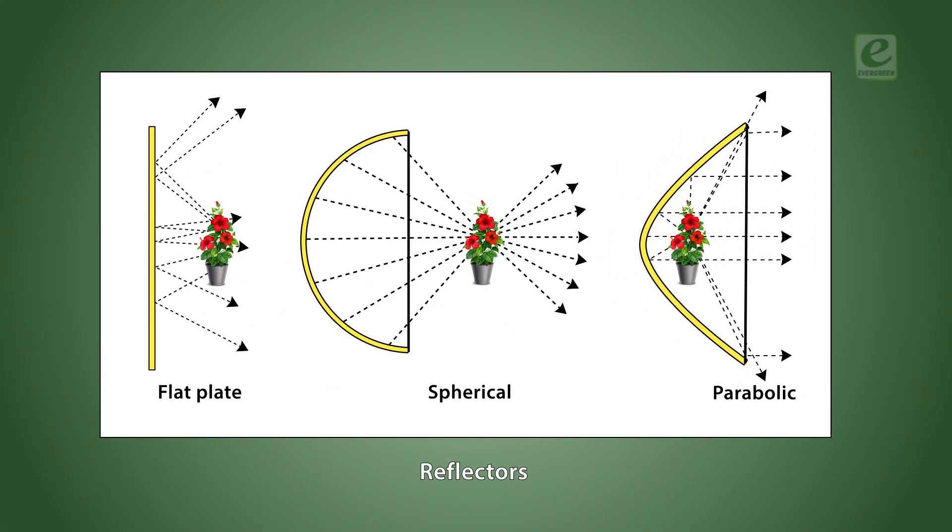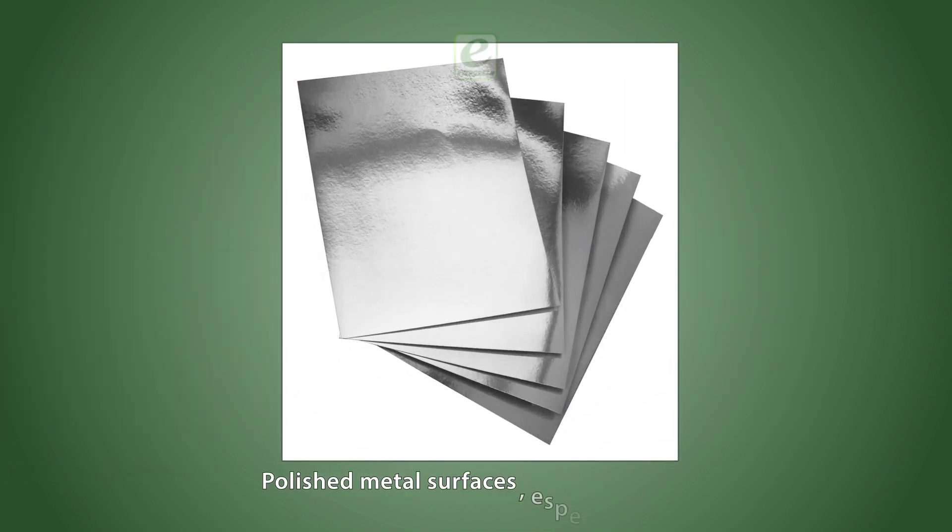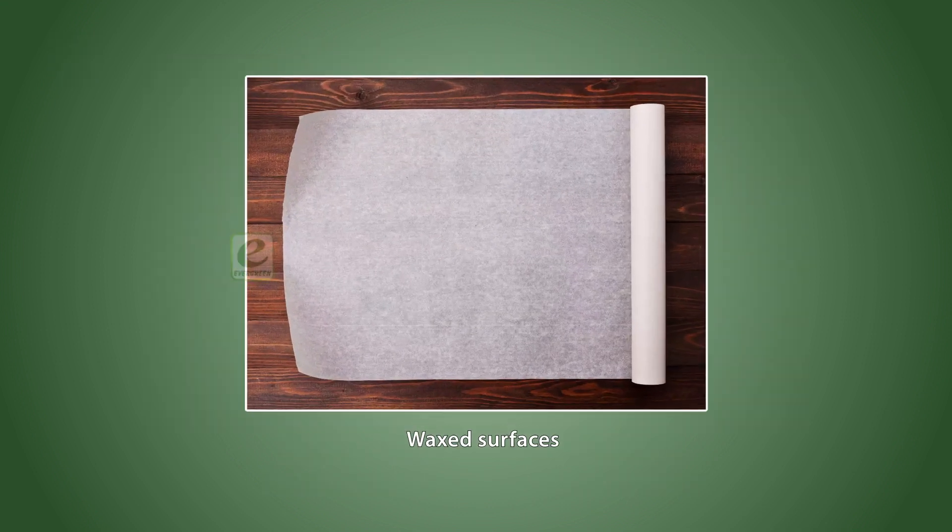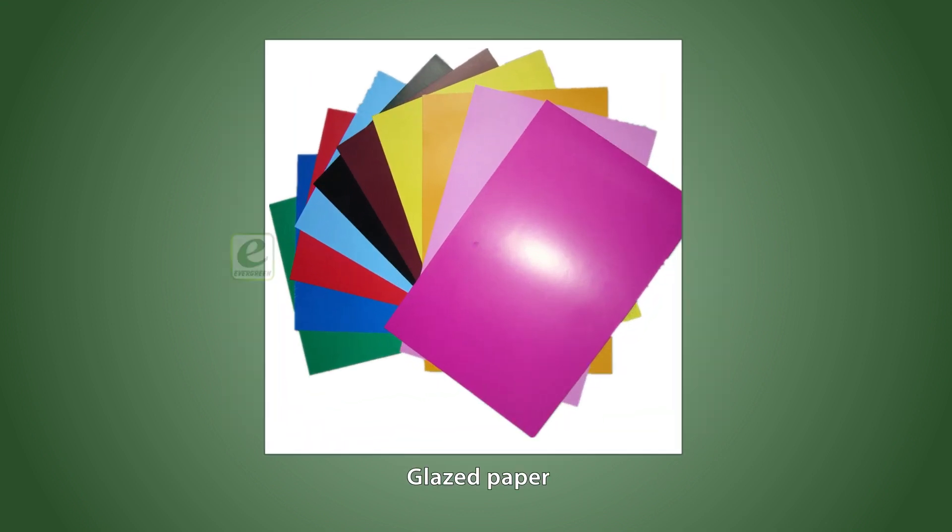The surface which reflects the light is known as a reflector. Polished metal surfaces, especially silver, are good reflectors. Water surfaces, waxed surfaces, and glazed paper also act as reflectors.